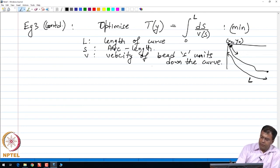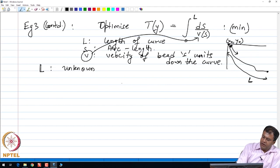In this problem, we know that L is an unknown of the problem. We do not know the total length of the curve. To find this velocity to be substituted in this integral, we utilize the conservation of energy.